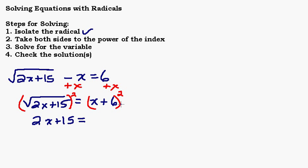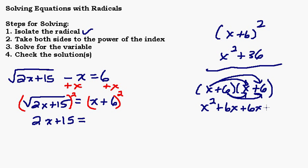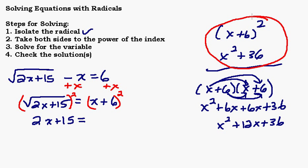Don't make the mistake of taking x plus 6 squared and just going x squared plus 6 squared — that's not right. X plus 6 squared actually means x plus 6 times x plus 6. You have to distribute and FOIL: x into both terms gives x squared plus 6x, then 6 into both terms gives another 6x plus 36. So we end up with x squared plus 12x plus 36. If you square incorrectly you'll lose your middle term. So x plus 6 quantity squared equals x squared plus 12x plus 36.